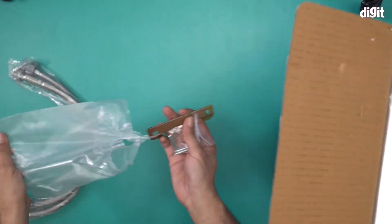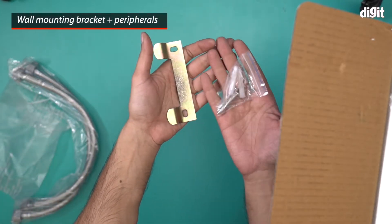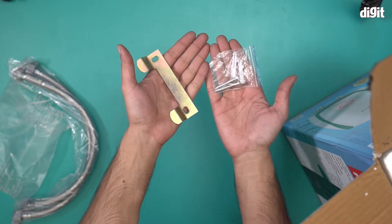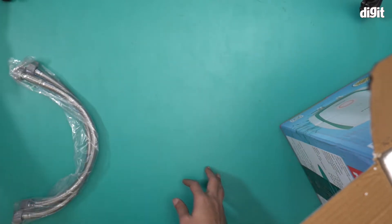We have some brackets and screws. This is a bracket and this is a screw. These are for when you want to mount this geyser to a wall. These are the elements you'll need to do that. I'm keeping them aside.